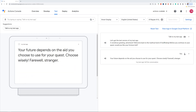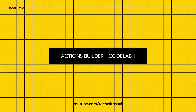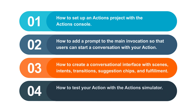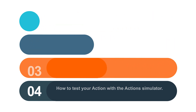Your future depends on the aid you choose to use for your quest. Choose wisely. Farewell, stranger. With that, we have successfully covered part one of this codelab series. We covered how to set up an actions project with the Actions Console, how to add a prompt to the main invocation, how to create a conversational interface with scenes, intents, transitions, suggestion chips, and fulfillment, and how to test your action with the action simulator. Let me know your comments and thoughts about the new Actions Builder in the comment section below.